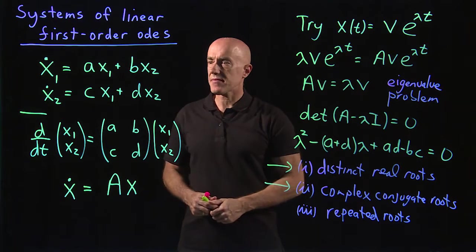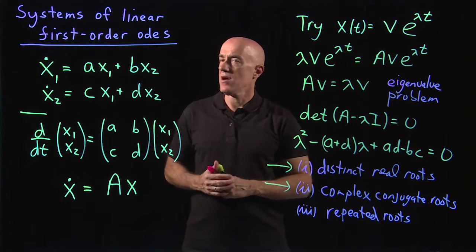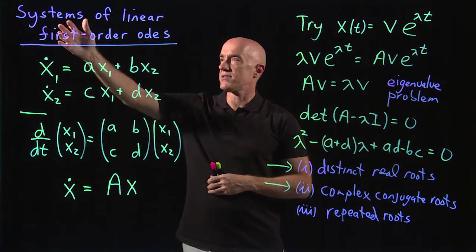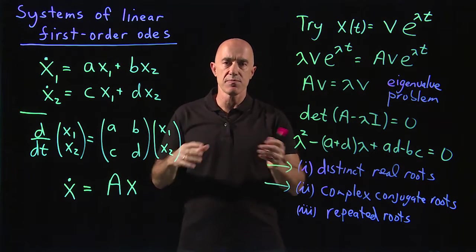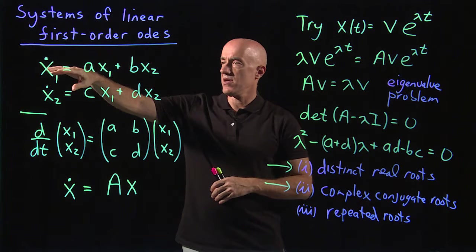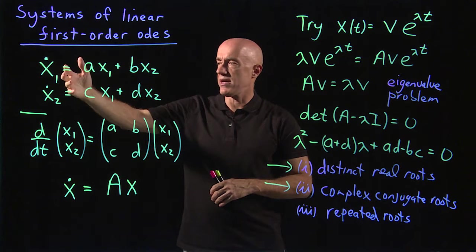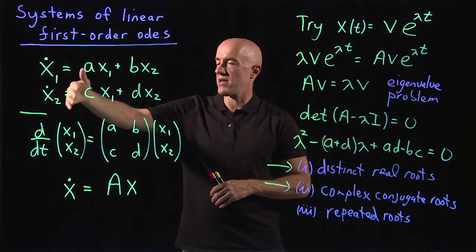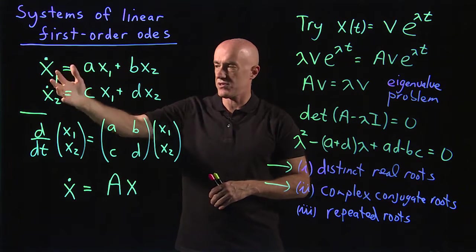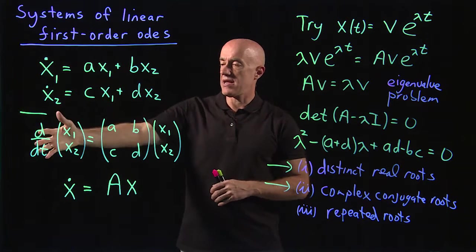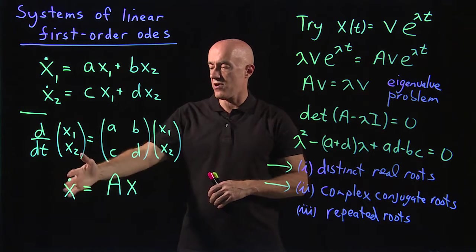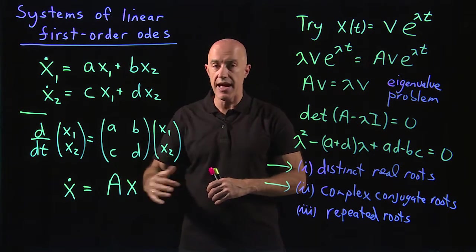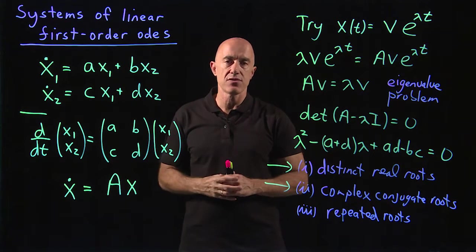Okay, so let me summarize. We're now considering how to solve a system of linear first-order equations. For simplicity, we'll consider two equations, an equation for x1 and an equation for x2. We can write it as a single matrix equation or in compact form as x dot equals Ax, where A is a 2 by 2 matrix.